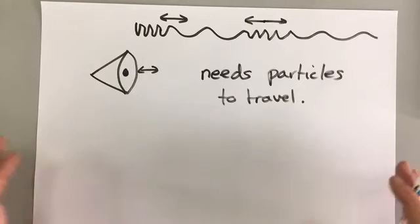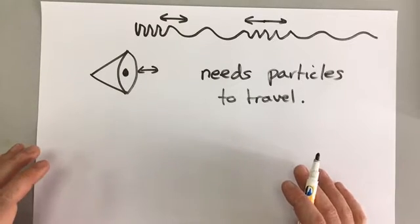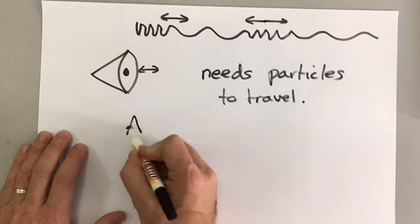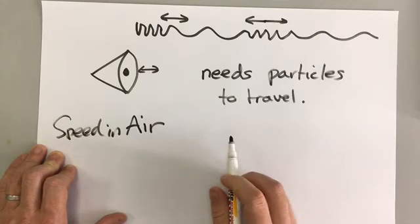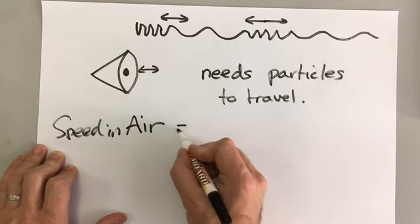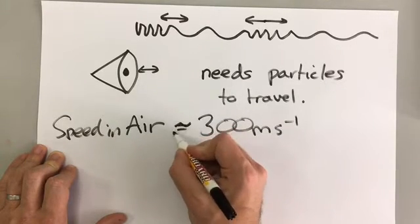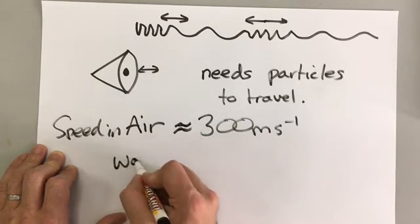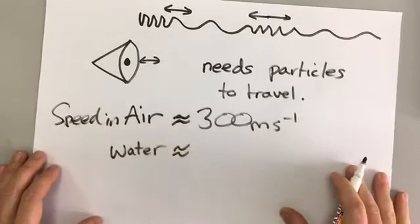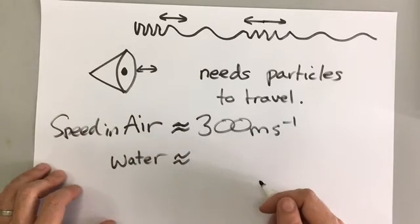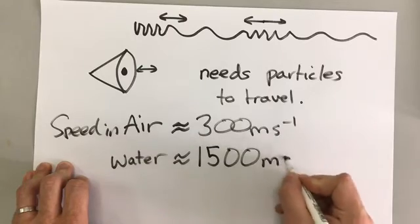Now we can reverse that and say if we have more particles then sound can travel faster. So actually in air, sound travels around 300 metres per second approximately. In water, where the particles are closer together, because in a liquid the particles are closer together than a gas, the speed of sound is around 1500 metres per second.